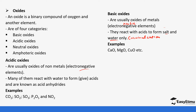Sulfur trioxide (SO₃) forms sulfuric acid. Phosphorus pentoxide forms phosphoric acid. And nitrogen dioxide forms nitric acid.